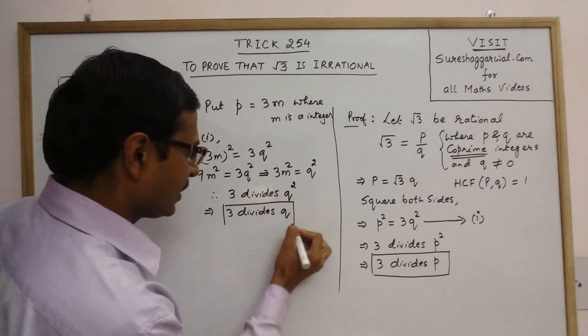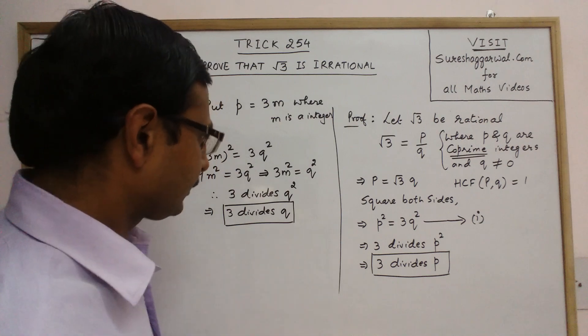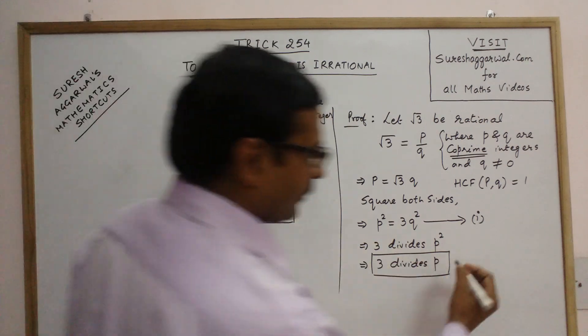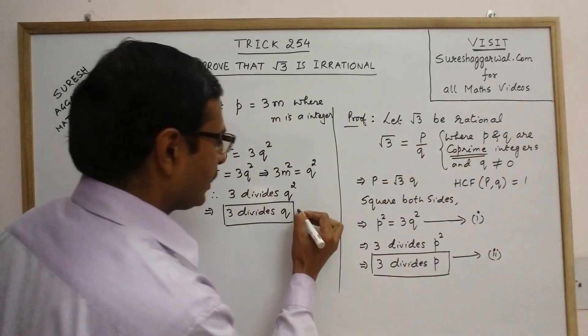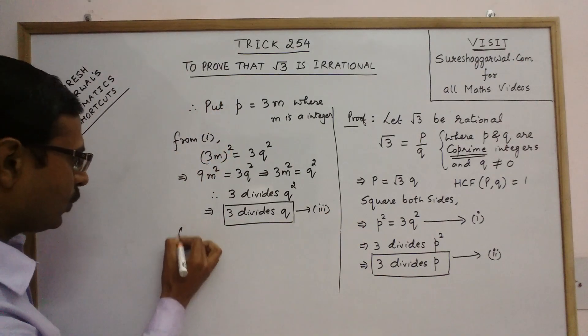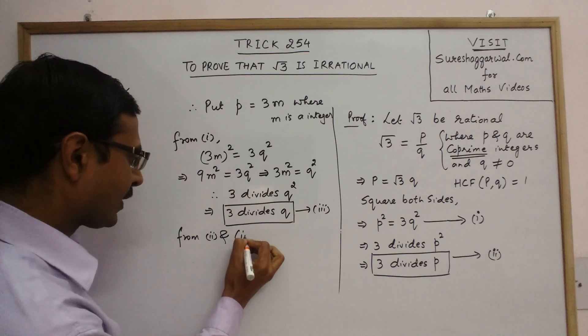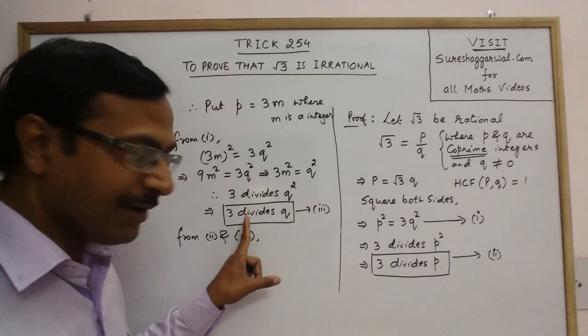Now this is the second part of the theorem. Now see there are 2 blocks which I have made here. I will call this equation number 2 and call this as statement number 3. So from 2 and 3, 3 divides p and 3 divides q.